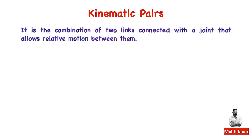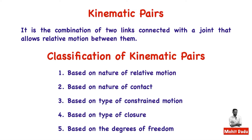A kinematic pair is simply the combination of two links which are connected with a joint, allowing relative motion between them. There are different classifications based on different criteria: relative motion, nature of contact, type of constrained motion, type of closure, and degrees of freedom.